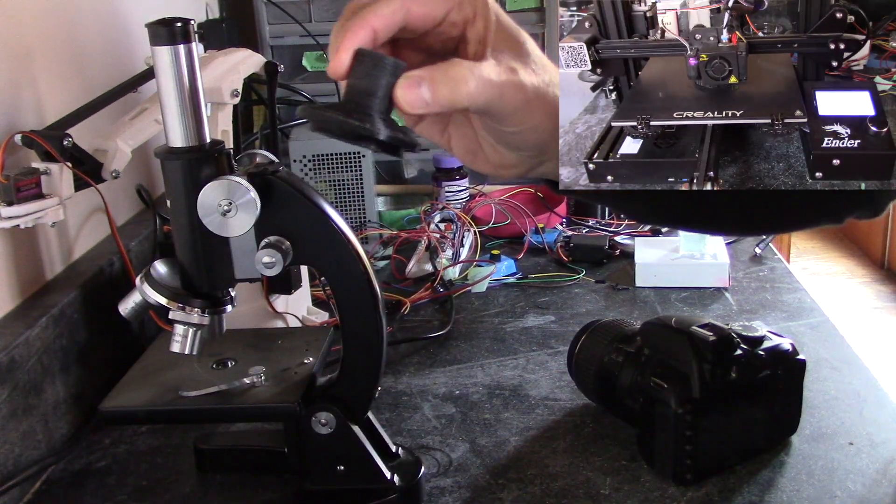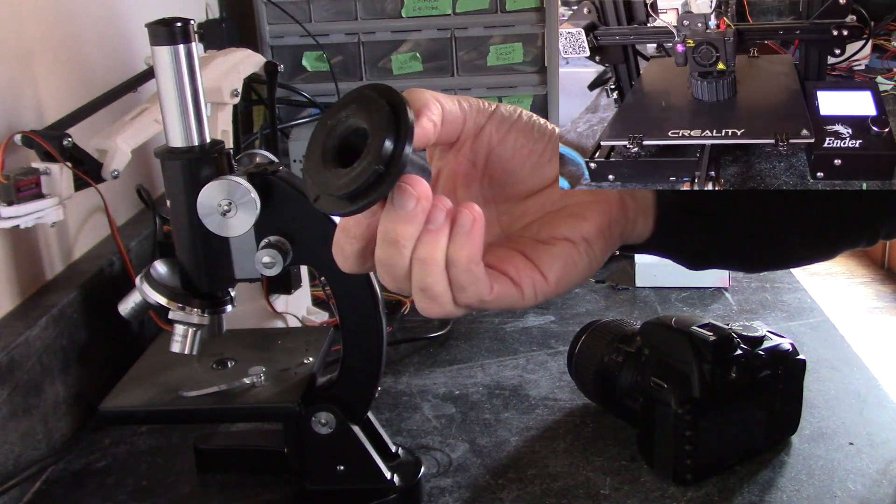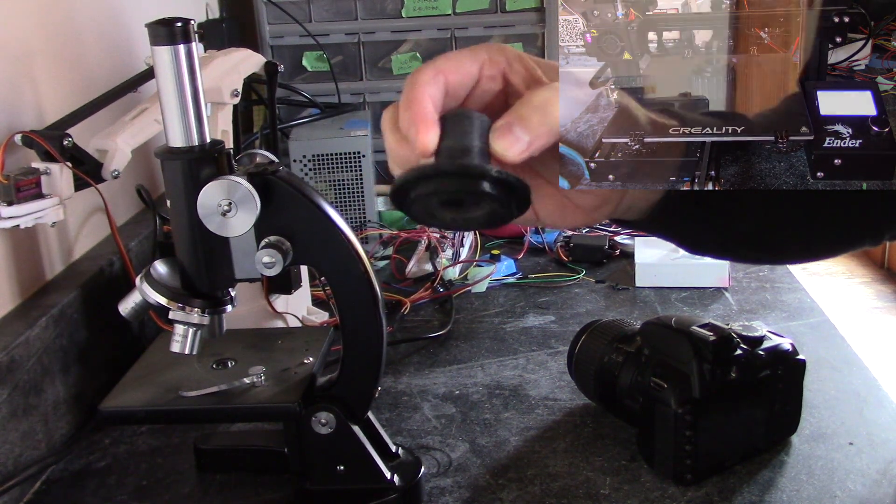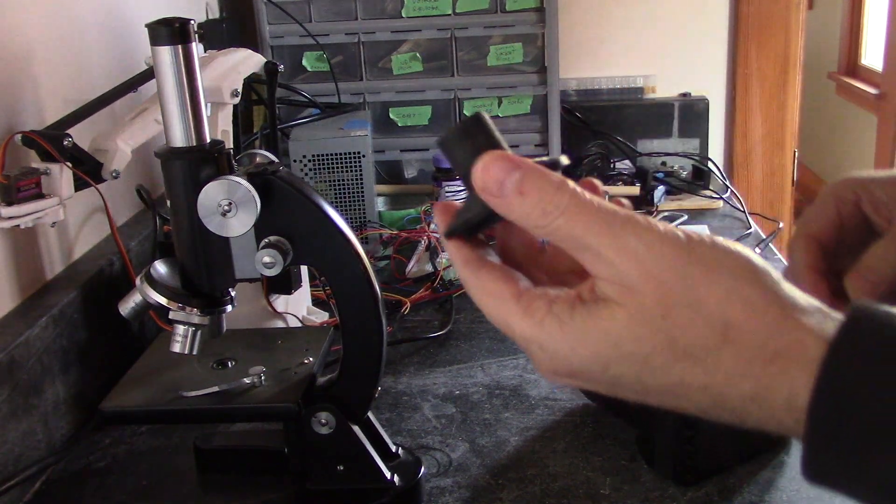So what I've got here is I printed out this adapter. And this is an F-ring adapter for a Nikon. And in the description below, I'll put a link where you can download the STL files and print it yourself.